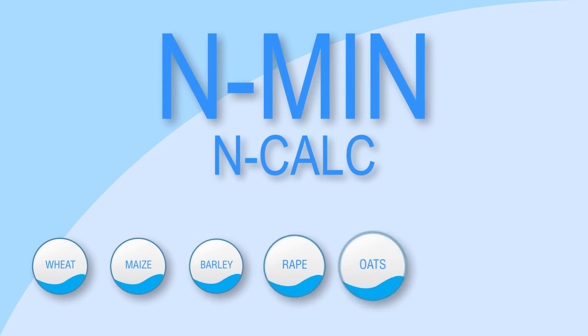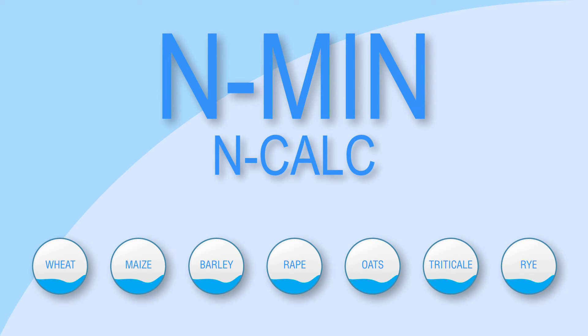NMIN and NCALC, available for use in all major combinable crops, including forage maize.